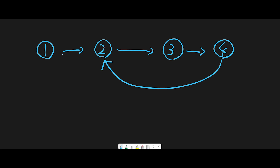My strategy is I use two pointers. One is a slow pointer and the other is a fast pointer. The slow pointer moves once every time and the fast pointer moves twice every time. And if we have a circle in the linked list, the fast pointer will chase the slow pointer from the back, and at some point they meet each other. In that case, we should return true.